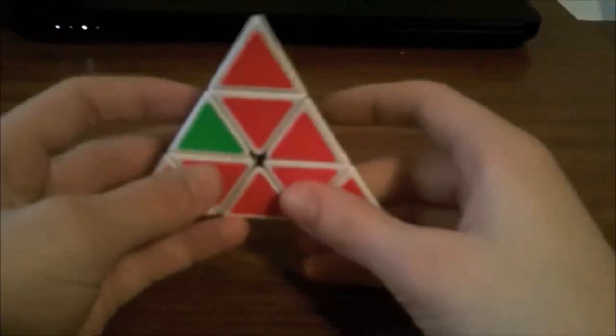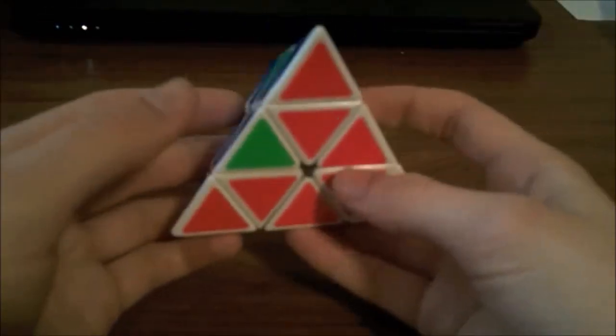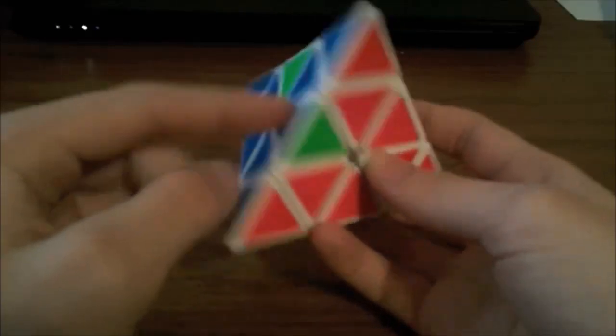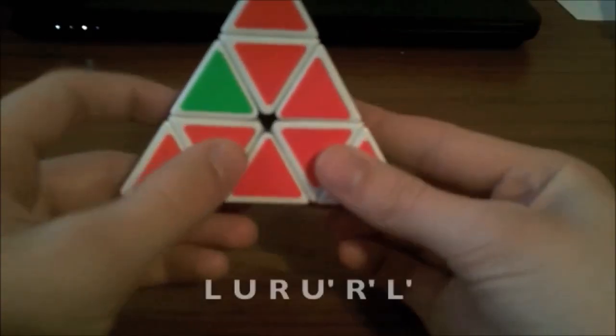So the inverse of this is where you have the V on the right and the other matching piece on the left like that. So you hold it like this and you do...